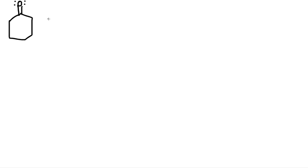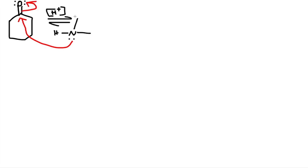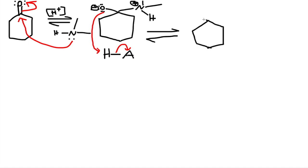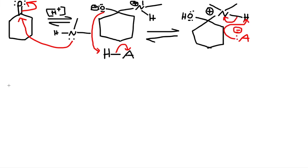Let's do the mechanism for this. We start with the ketone — it's a reversible reaction. We're in acidic conditions and we have this secondary amine. First, the amine attacks the carbon and gives electrons to the oxygen. We get a structure with a negative charge on the oxygen and a positive charge on the nitrogen. The acid comes in; oxygen grabs the hydrogen and kicks off the A-minus.